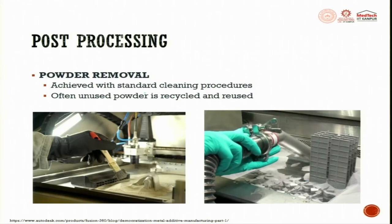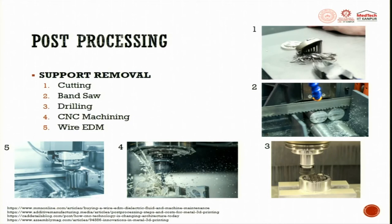Powder removal is achieved with standard cleaning procedures, and often unused powder is recycled and reused. Once the process is done, we use vacuum sucking to remove all the free powders that have not been sintered or melted by laser or electron beam. All those powders are taken back and recycled for the next printing. Support removal is another important thing - we use cutting, band saw, drilling, CNC machining and wire EDM for removing the supporting structures.